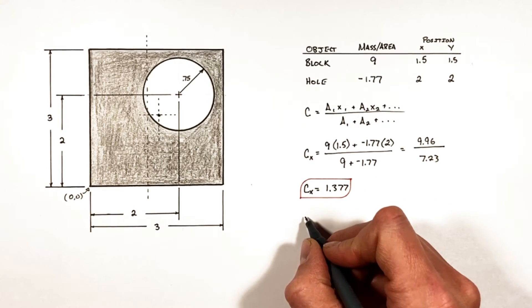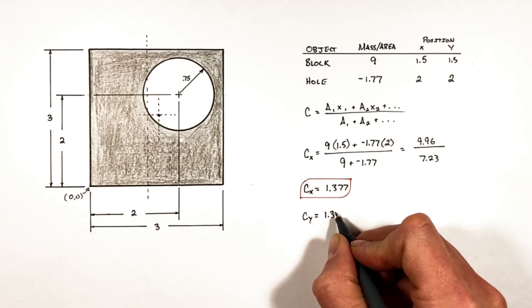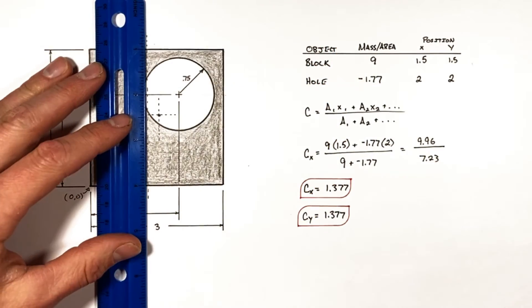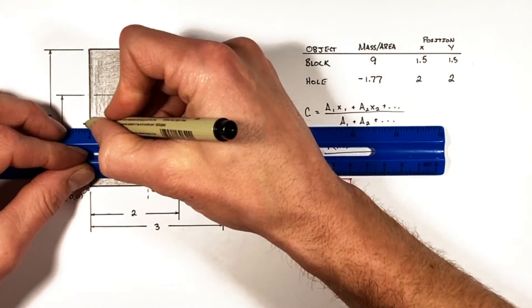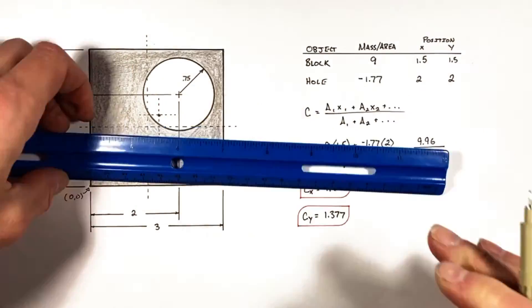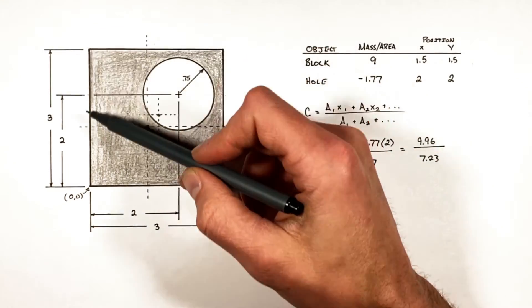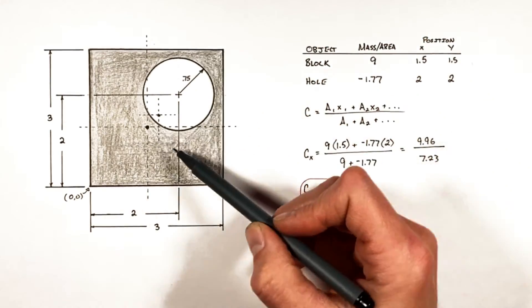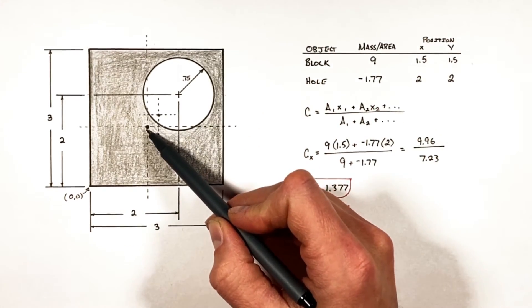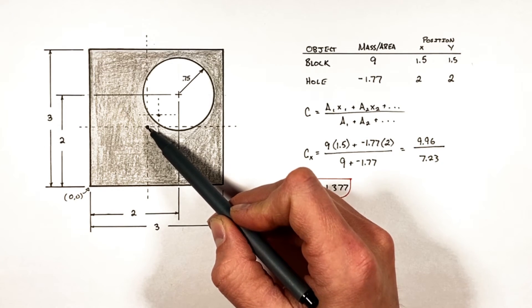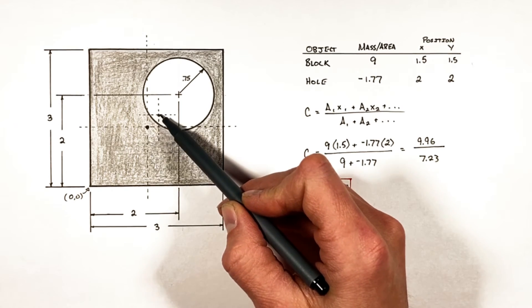We find in two dimensions the center of area of this block with the hole cut out of it lies right here. That's slightly below and to the left of where the center of mass of just the block was on its own.